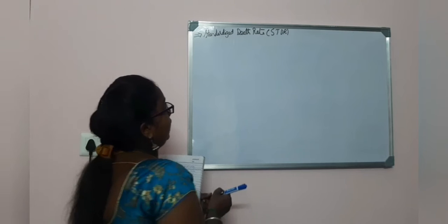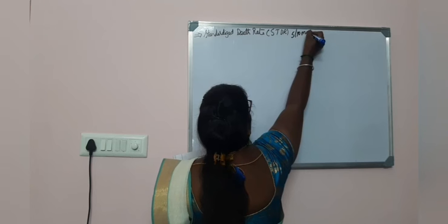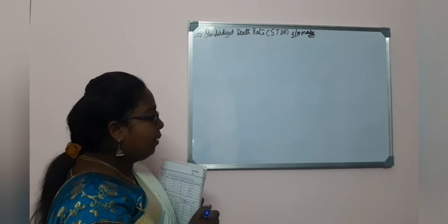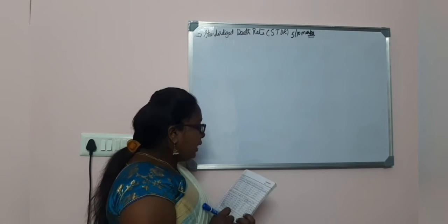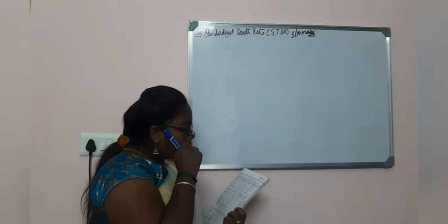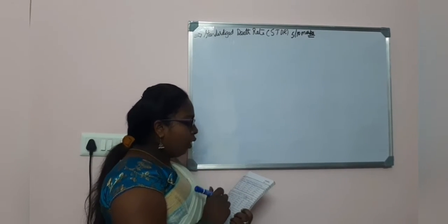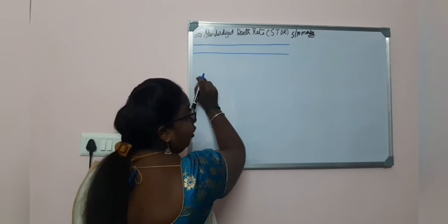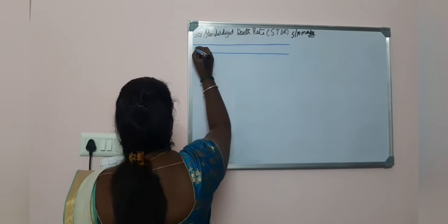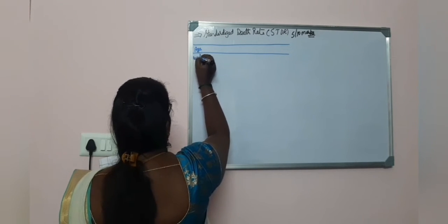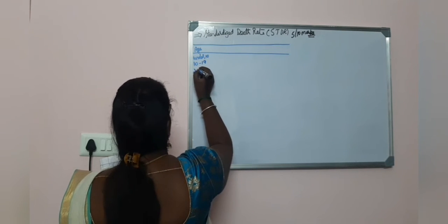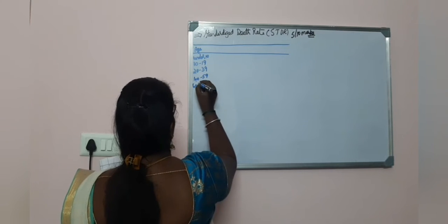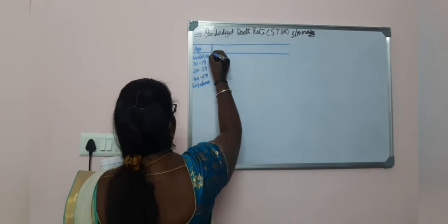Now going for 5-mark and 10-mark problems. Problem 1: Compute CDR and STDR for the following data. Data is given for us — please record the slides for the question, I will give only the solution on the board. Age groups are: under 10, 10 to 19, 20 to 39, 40 to 59, and 60 and above. Population values are 20,000; 10,000; 50,000; 30,000; and 10,000.